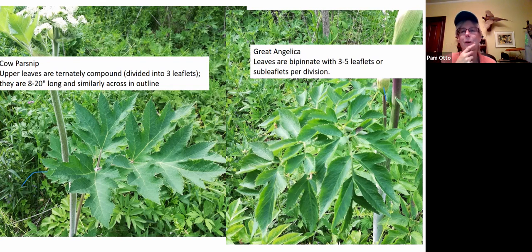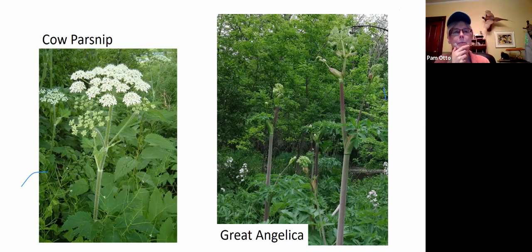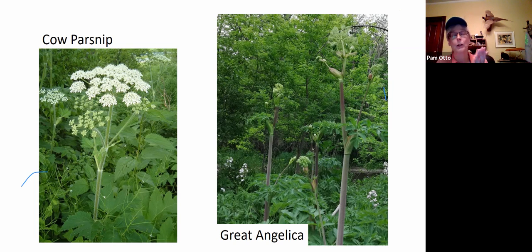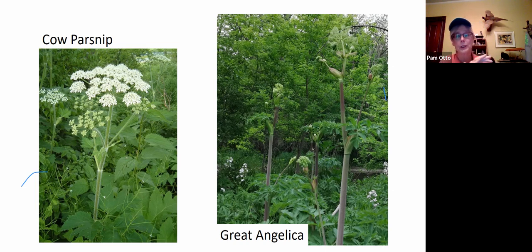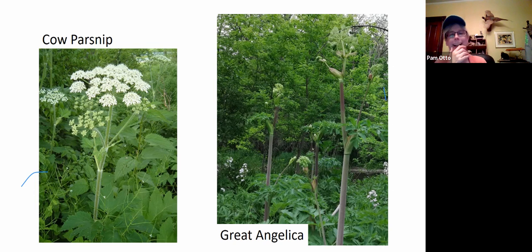Once the flowers are blooming it's a whole lot easier — cow parsnip gets a big white bloom, and great angelica gets a bold green bloom, like fireworks. Great angelica tends to tower overhead — blooms sometimes six feet or more in the air — whereas cow parsnip tends to be maybe waist or shoulder height. Cow parsnip is not the same as wild parsnip, which has a yellow blossom. This parsley family has all kinds of twists and turns, but we won't explore more deeply this week.